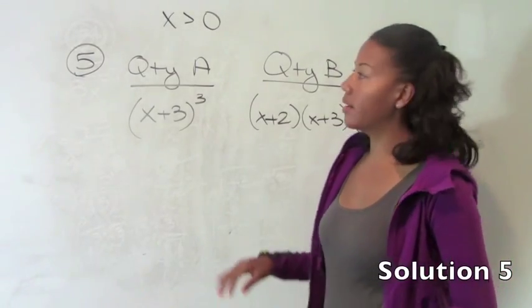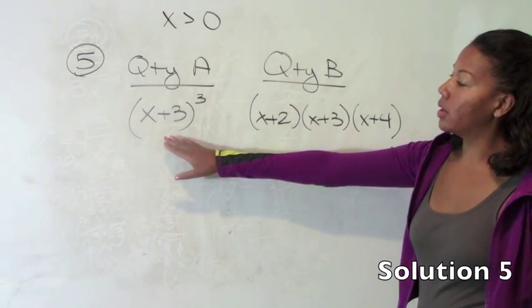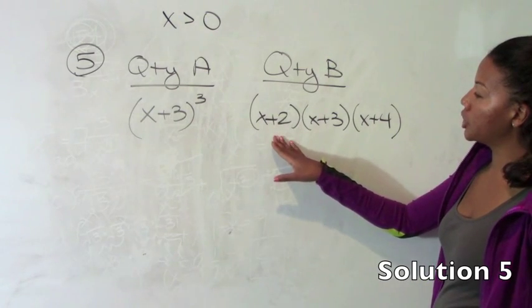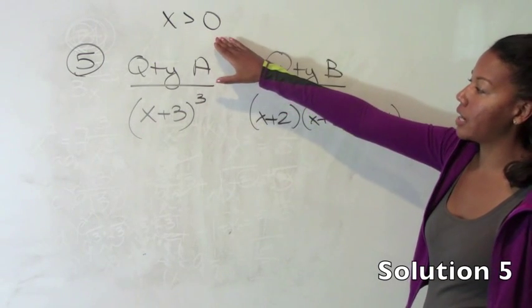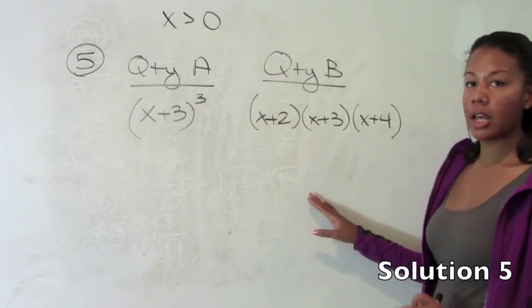Number 5. Number 5 is a quantitative comparison question. So we are to compare the quantity x plus 3 cubed to x plus 2 times x plus 3 times x plus 4. Note here that they tell us that x is greater than 0.